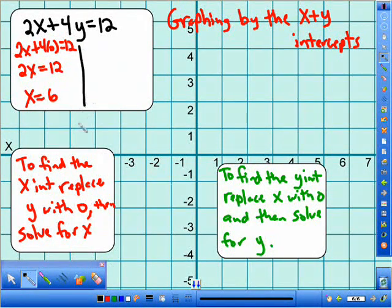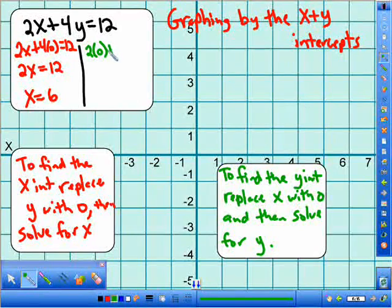Now, the other side, to find the Y intercept. What does it say? To find the Y intercept, replace X with zero. So we write 2 times zero plus 4Y is equal to 12.